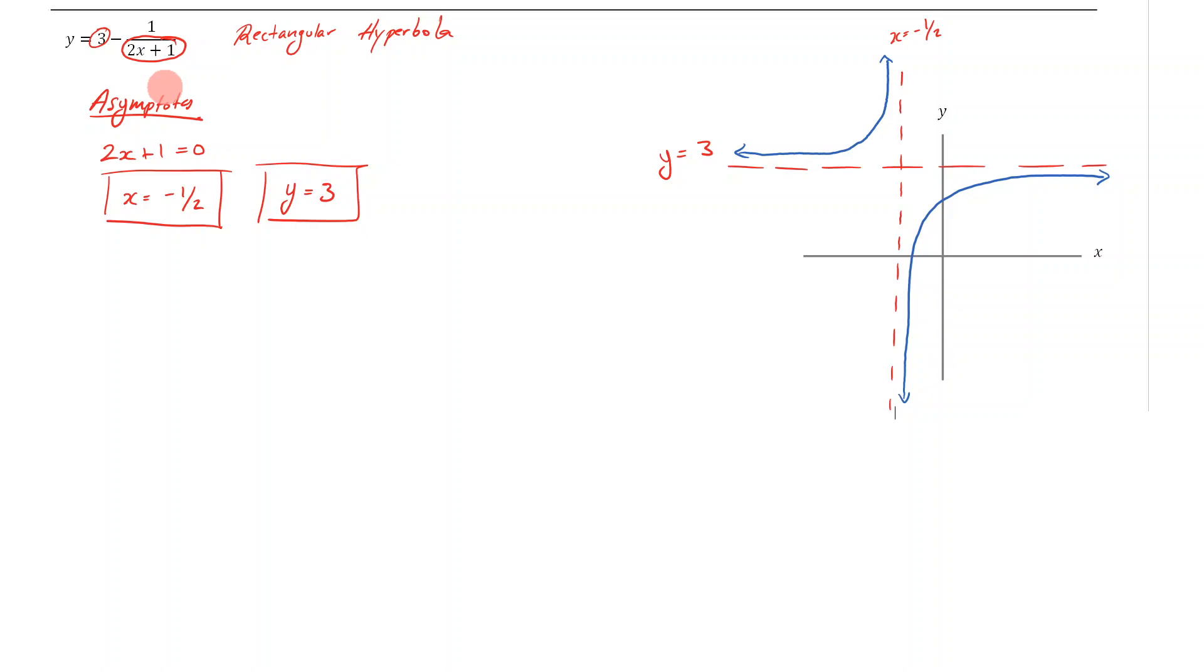Because I've got a negative here, I've drawn it this way. If there wasn't a negative, I would draw it over here—that's the standard way it looks. But because I've got a negative, I've drawn it reflected. Hopefully that was a good revision of how to draw hyperbolas.